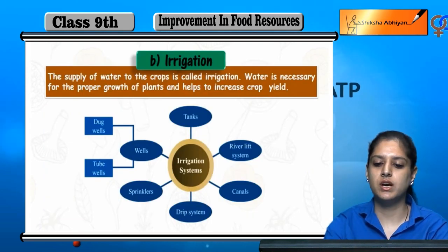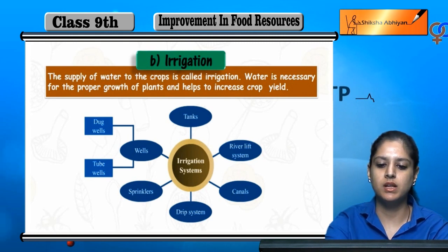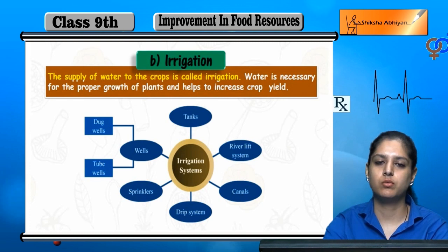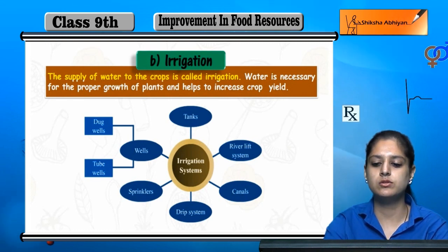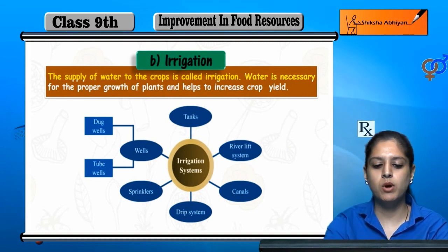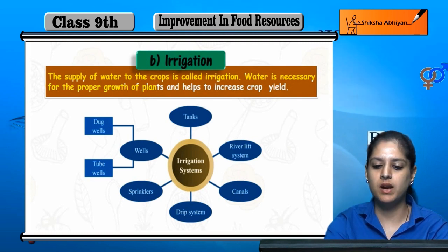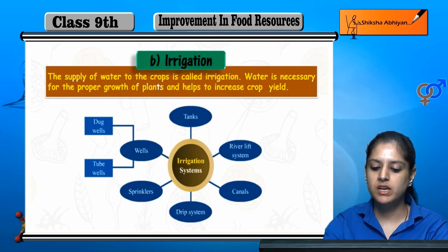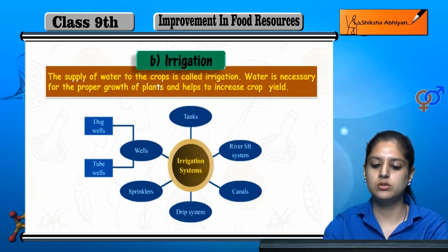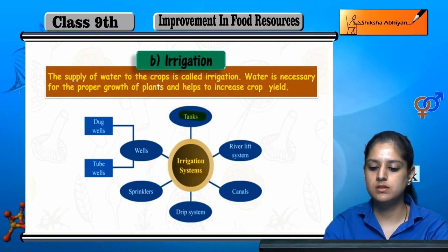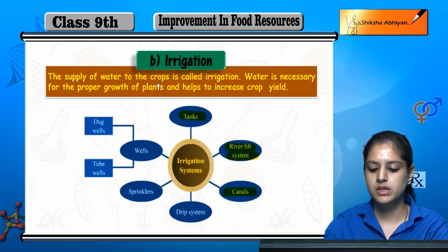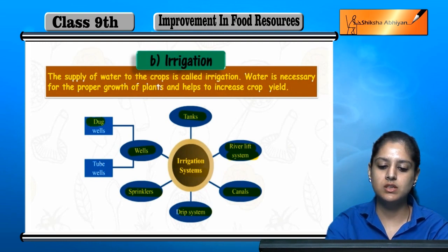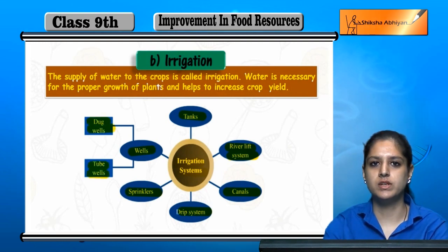Next, nutrient management includes irrigation. Irrigation means the supply of water to crops, which is very important for plants and crops. Different irrigation systems include: tanks, river lift systems, canals, drip systems, sprinklers, and wells. Wells can be dug wells or tube wells.